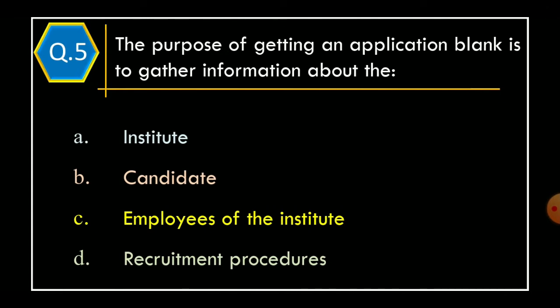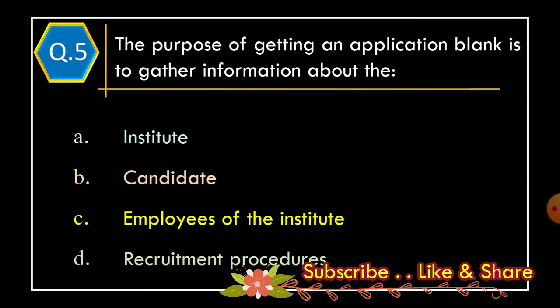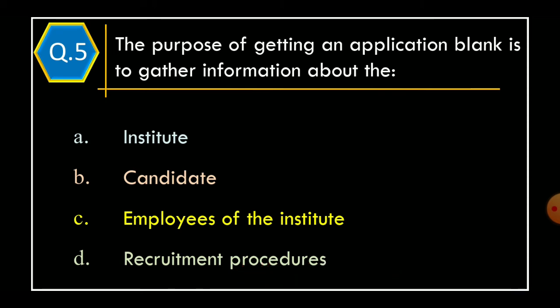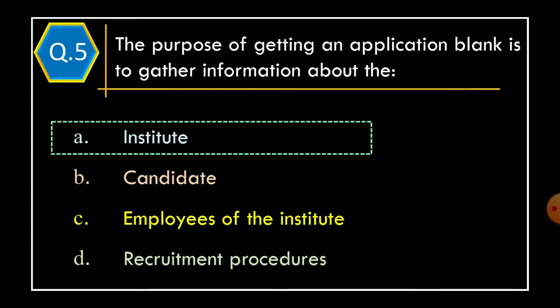Question 5. The purpose of getting an application blank is to gather information about the. Option A: Institute. Option B: Candidate. Option C: Employees of the institute. Option D: Recruitment procedures. The correct option is Option A: Institute.